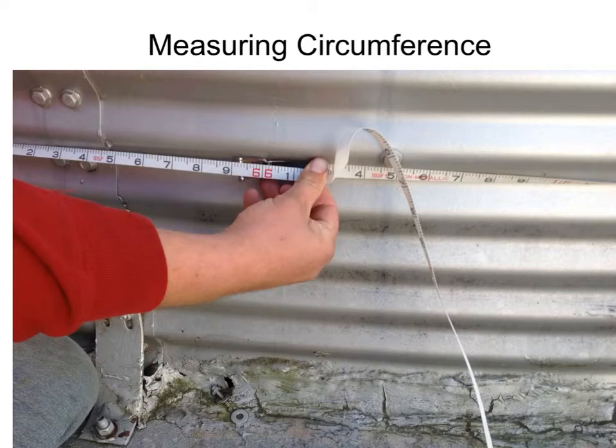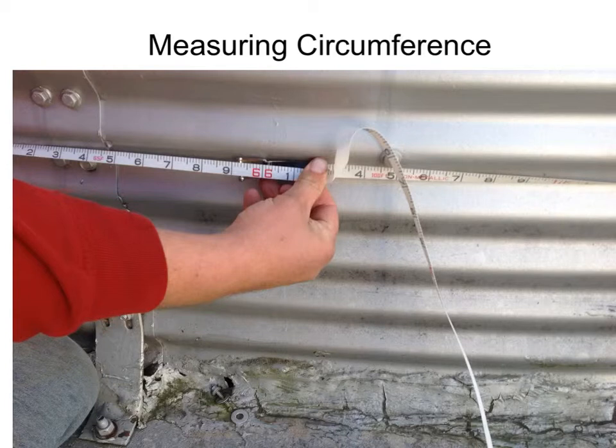Now in the case of this particular bin, there was already corn inside. So it wasn't possible to get in the bin and measure either the radius or the diameter. So we did the next best thing - we measured around the outside of the bin and measured the bin's circumference. Notice here in this picture that this circumference was 66 feet.